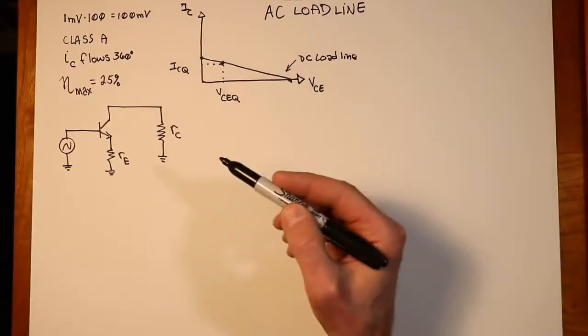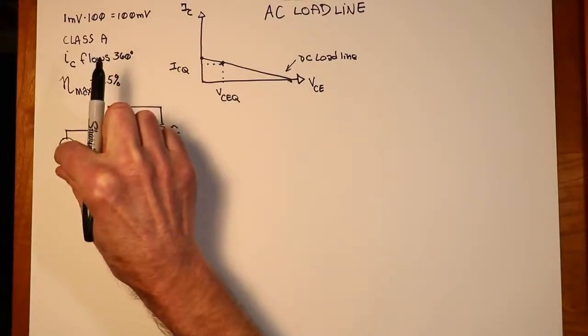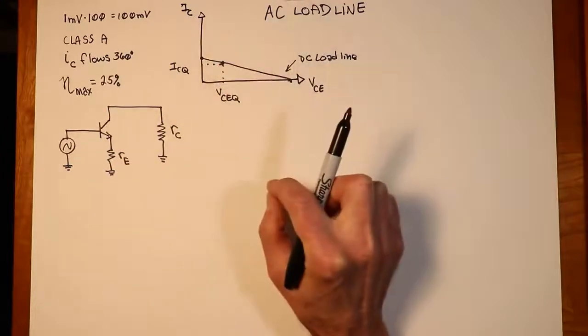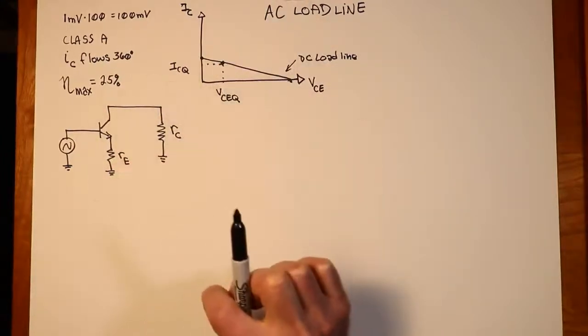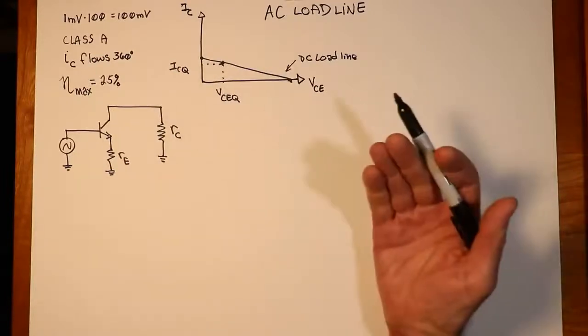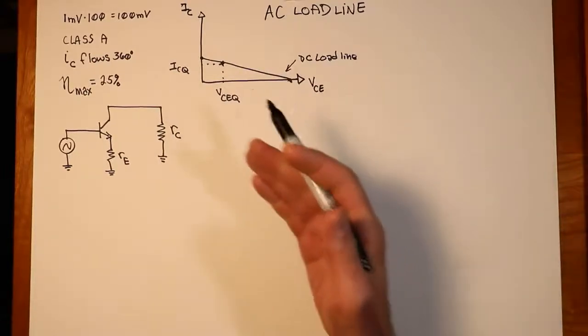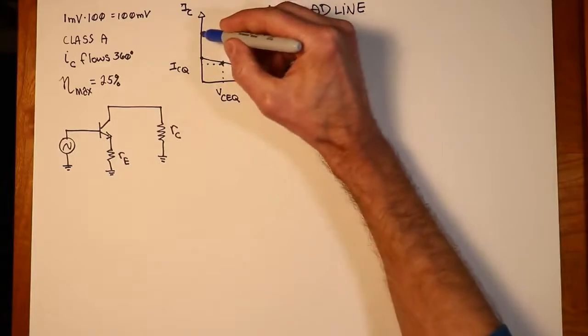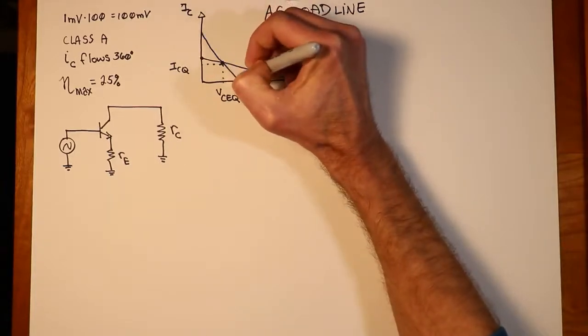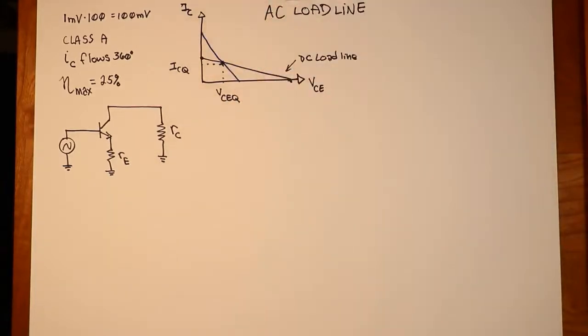The reason being, if you could imagine bringing the AC signal down to zero, it would collapse onto the Q point. So, the AC resistance would have to be smaller than the DC resistance, and therefore we would expect to see a greater slope, a steeper slope, for the AC load line. In other words, we might see something more along this line for our AC load line.